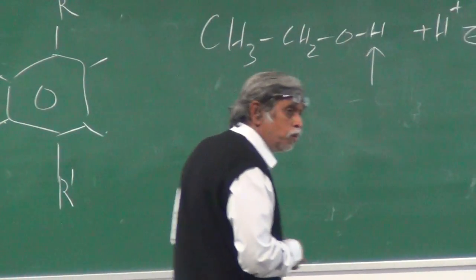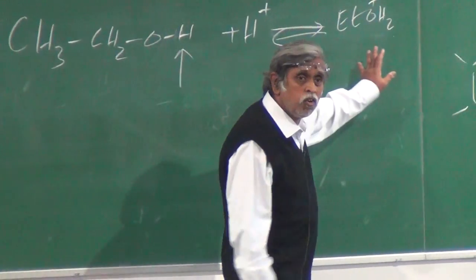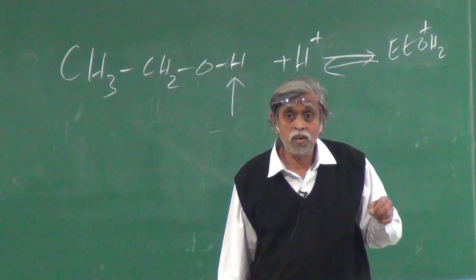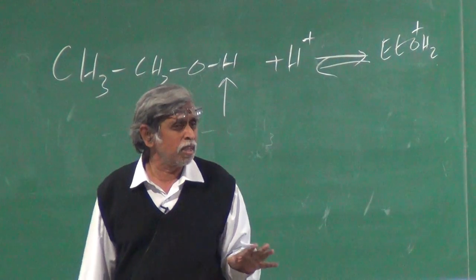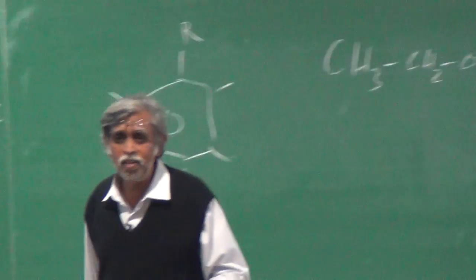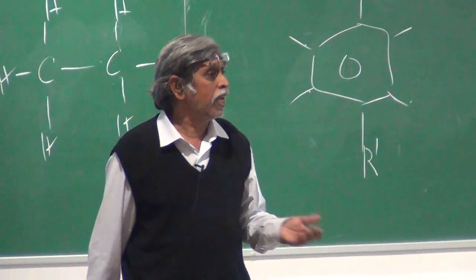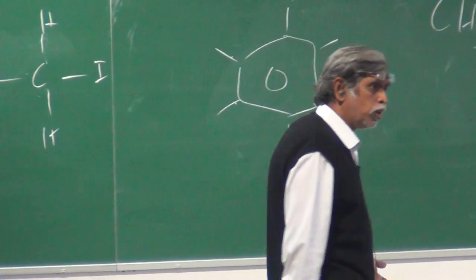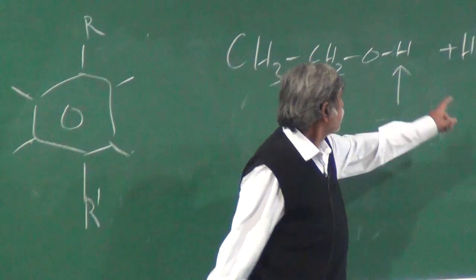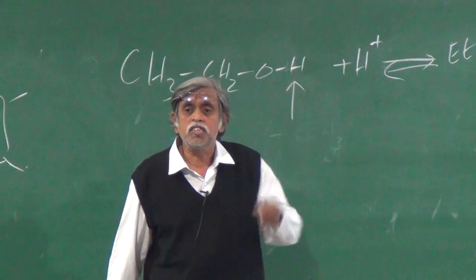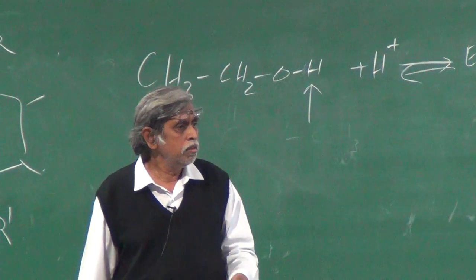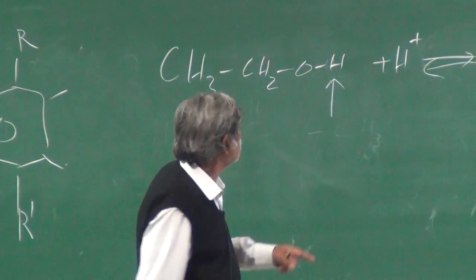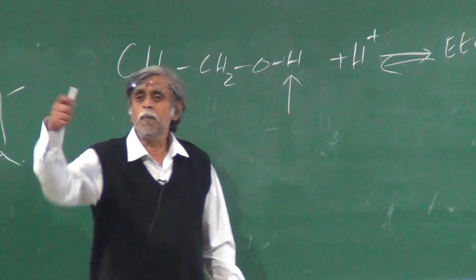And if this process is fast enough, what you essentially are going to see is only an average of these two orientations. And the average of up and down equal amount is basically zero. So, in essence, what I am trying to tell you is that if this equilibrium process is fast compared to the NMR time scales. The NMR time scales are rather slow. They are not on the picoseconds which Raman-Vibrational spectroscopy can give you. These are quite slow time scales. Milliseconds are really slow.